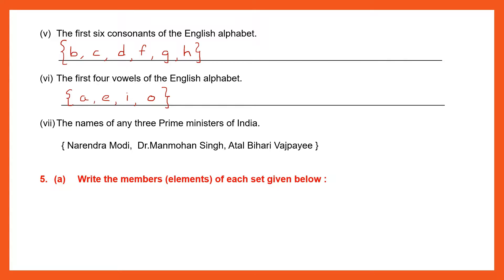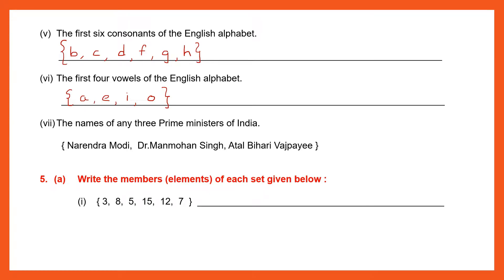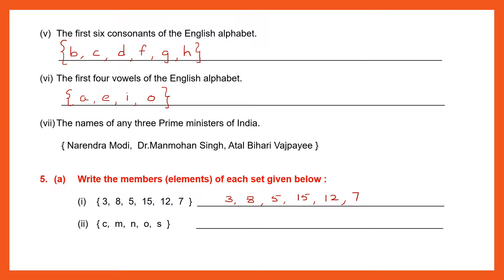Question 5A: Write the members or elements of each set given below. I have been given a set with members 3, 8, 5, 15, 12 and 7. All I have to do is pick them out and write: 3, 8, 5, 15, 12 and 7. Question 2: Pick out the members and write: C, M, N, O and S.